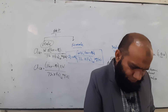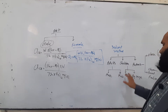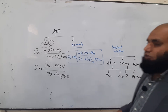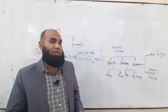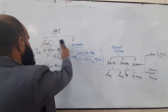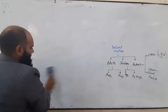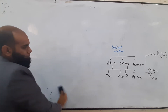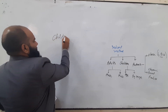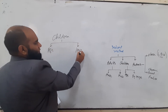For creatinine clearance in children, we have two scenarios: calculation by height and calculation by age. When calculating by height, there are two different age brackets.